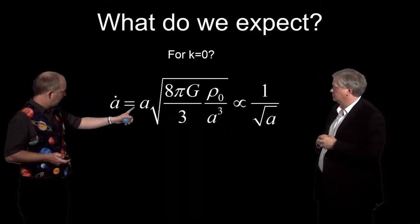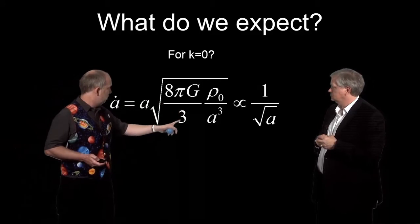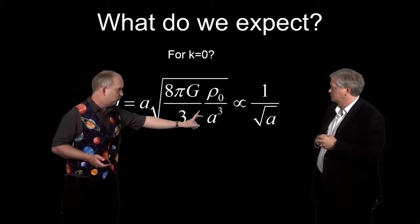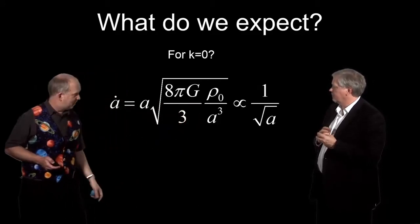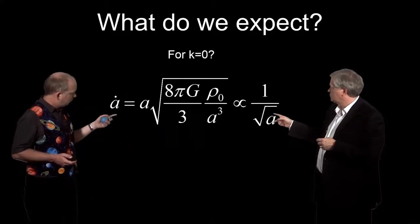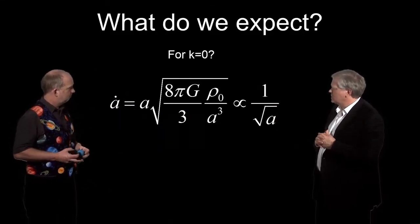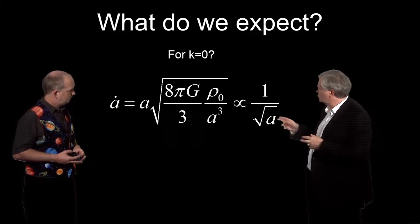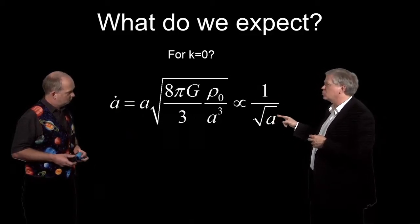So you just get A dot is equal to A, 8 pi G, rho nought over A cubed, this is for matter dominated, it would be A to the fourth for radiation dominated. So that's telling us for matter dominated, what have you got? So we end up with the change of A is proportional to one over the square root of A.